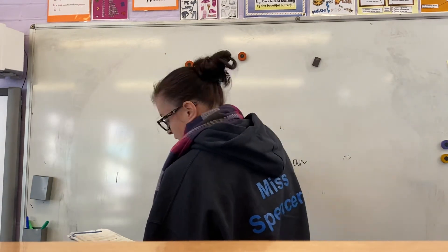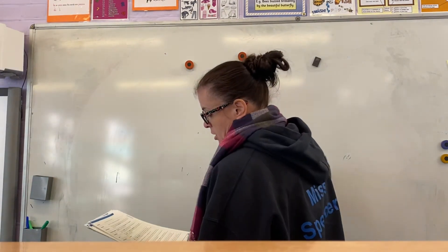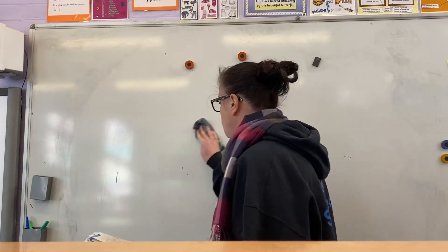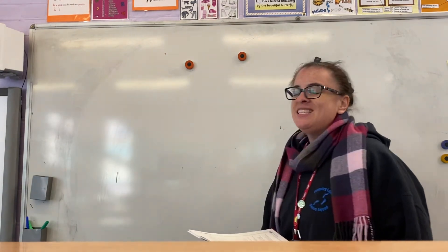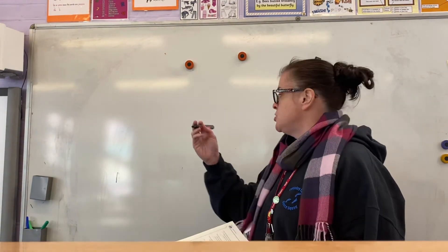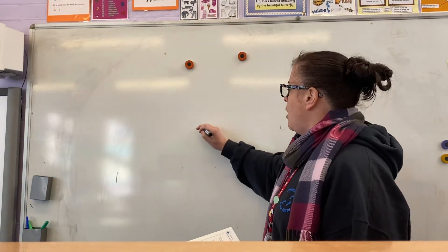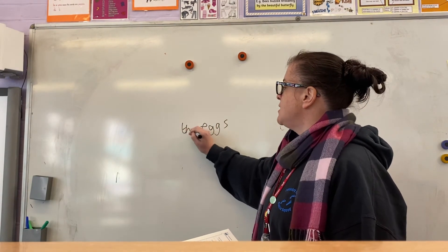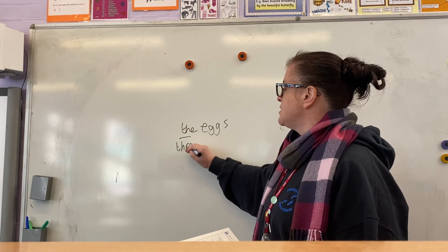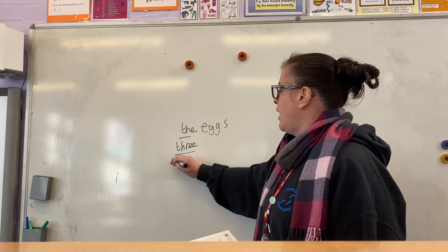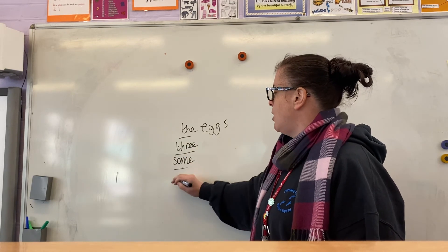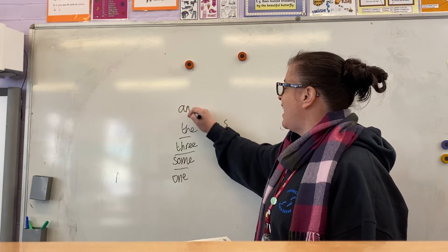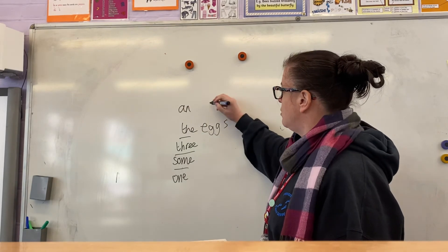Moving on to some D's. We've got determiners. Determiners come before a noun, similarly to articles, but determiners could be: if you have some eggs, you might have the eggs, you might have three eggs, you might have some eggs, you might have one egg, you might have an egg.